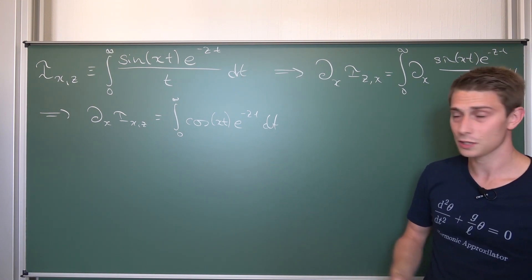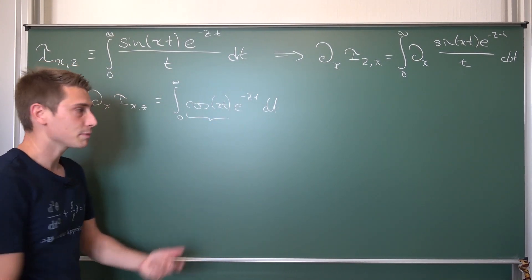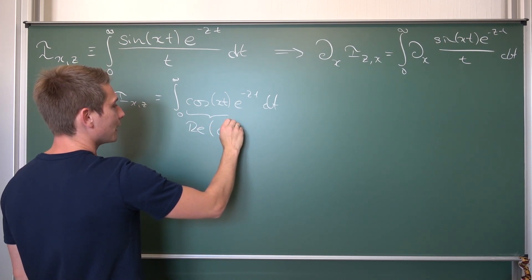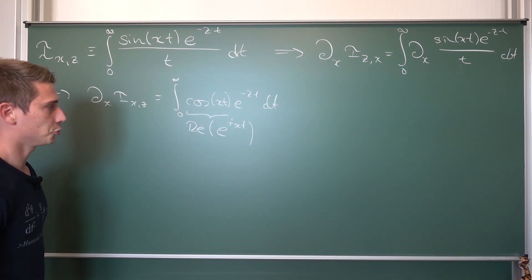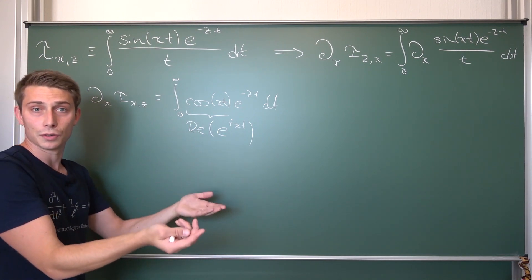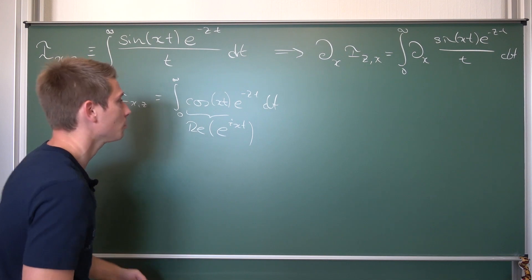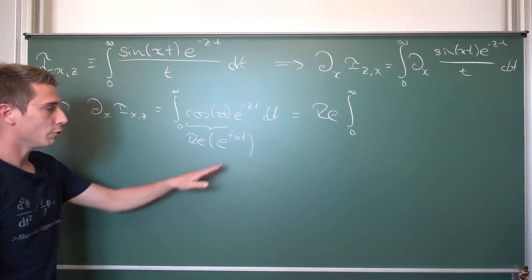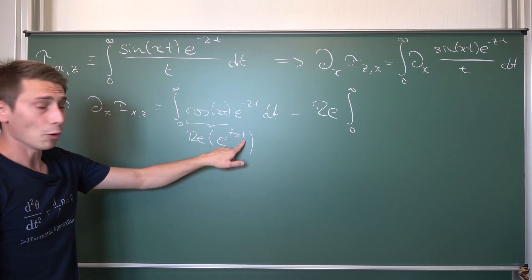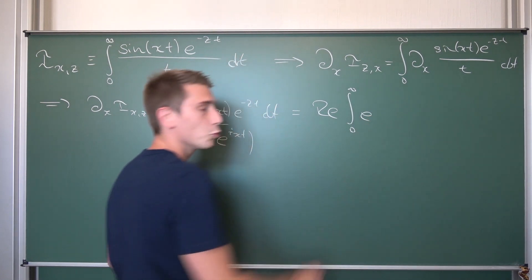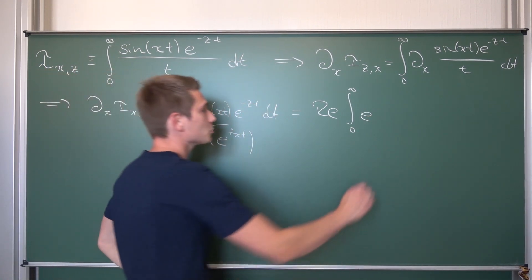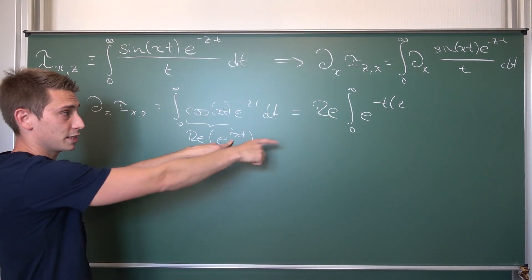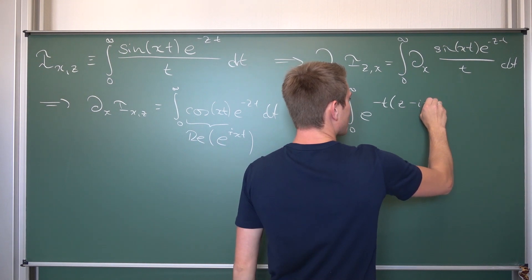But we are going to make use of a cooler approach: cos(xt) is nothing but the real part of the complex exponential e^(ixt). We are going to interchange the real part operator and the integral — since in the real numbers it's the Banach space embedded in the complex numbers, we can freely interchange the real operator — leaving us with the real part of the integral from 0 to infinity of e^(ixt) · e^(−zt) dt. Both are with respect to t, so we combine into one exponential. Factoring out negative t: e^(−t(z − ix)), integrated with respect to t.